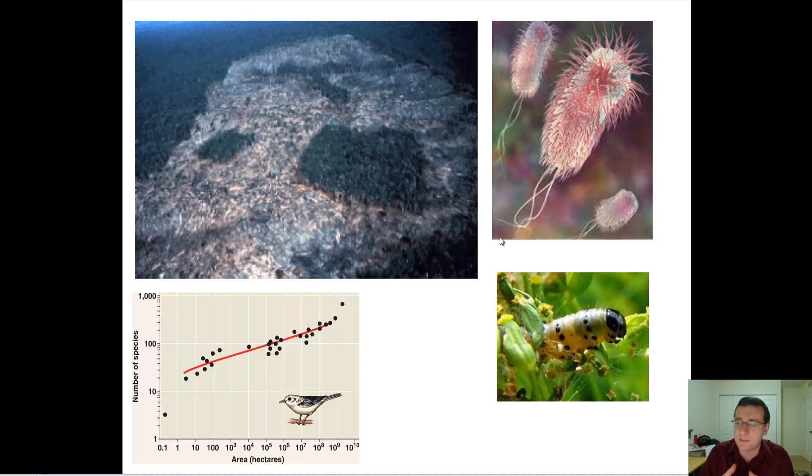And so those endemic species, which are species which are unique to a specific area of the planet, they're the most delicate and we're constantly destroying habitats from them.